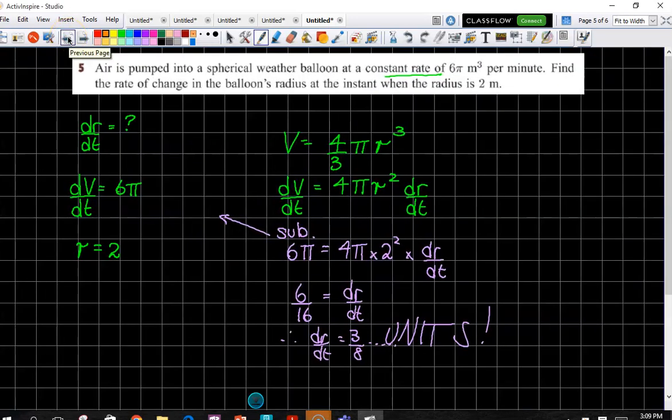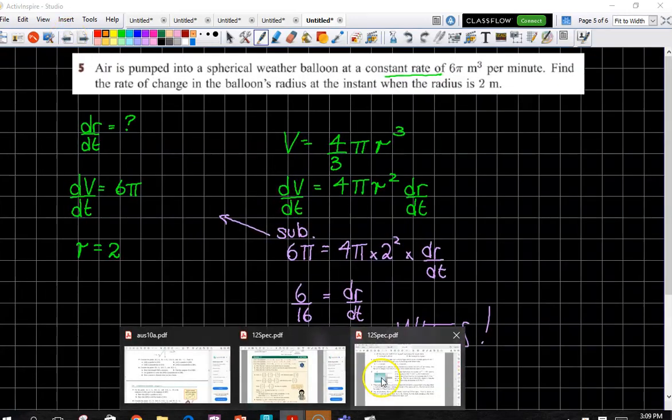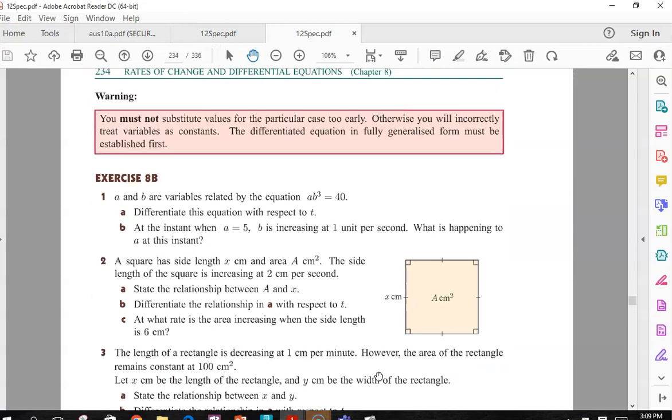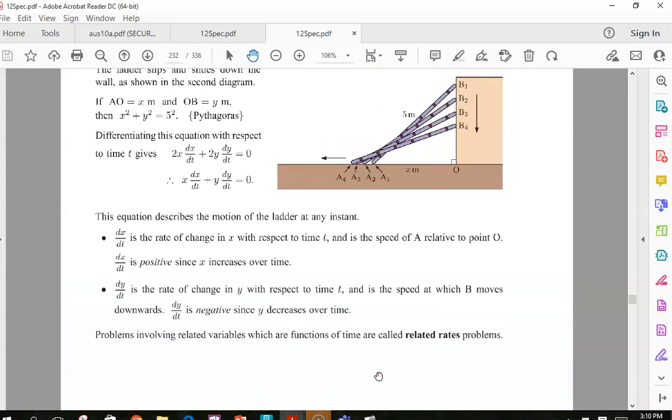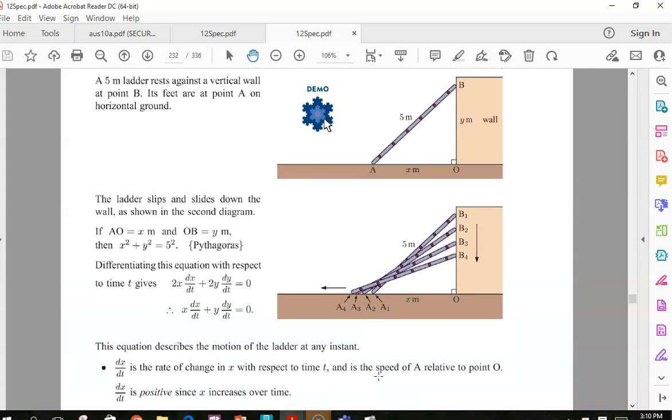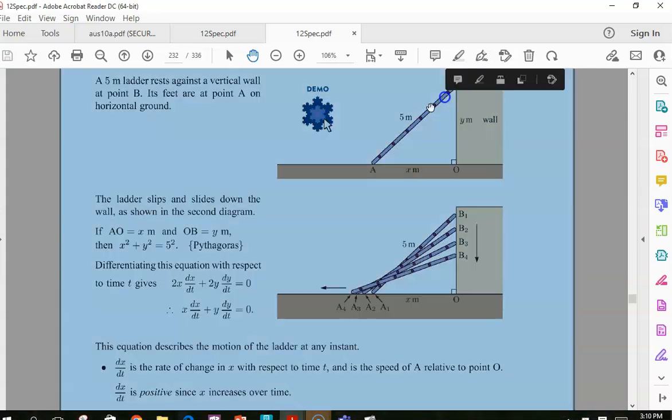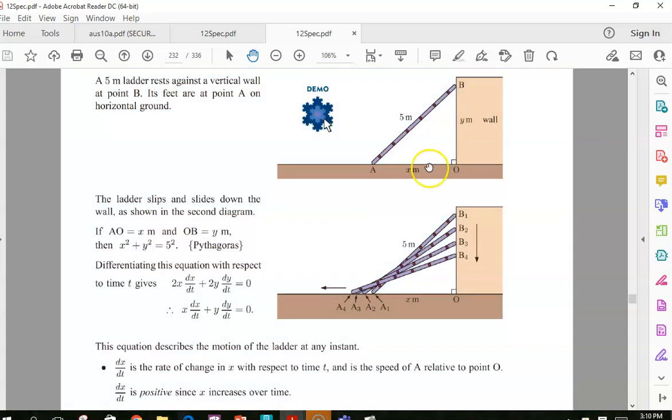Basically we're looking at the relationship of when one variable increases or decreases with the other. Go back, have a look at the first example, the intro. We can see here that if this ladder slides down, the length here is going to be increasing at a particular rate, and that's going to be affected by this length here decreasing at a particular rate. Your job is to find a connection between the two variables. In this case, it would be Pythagoras.